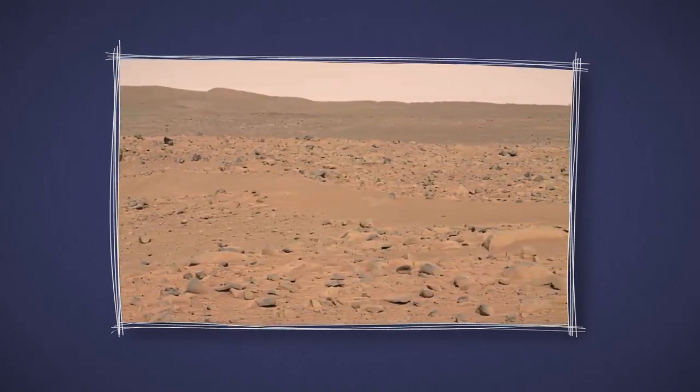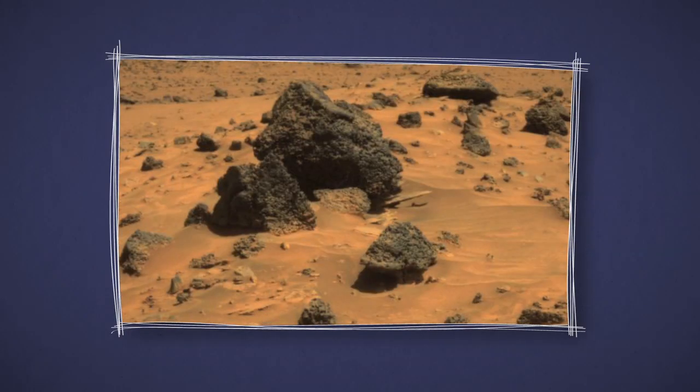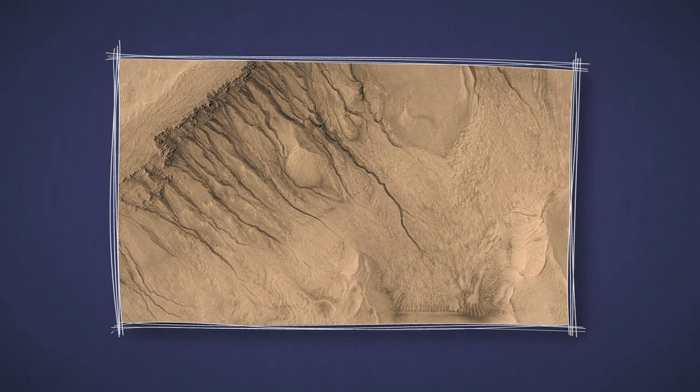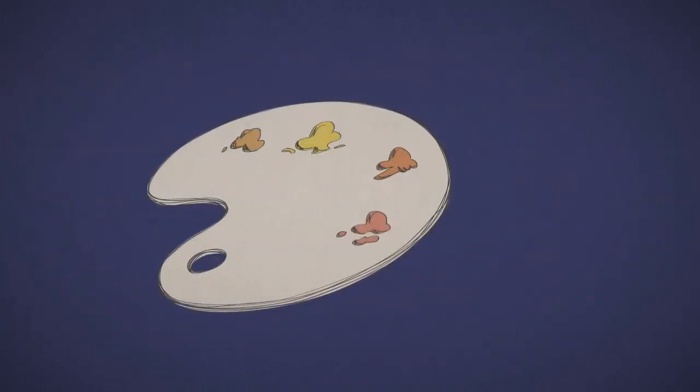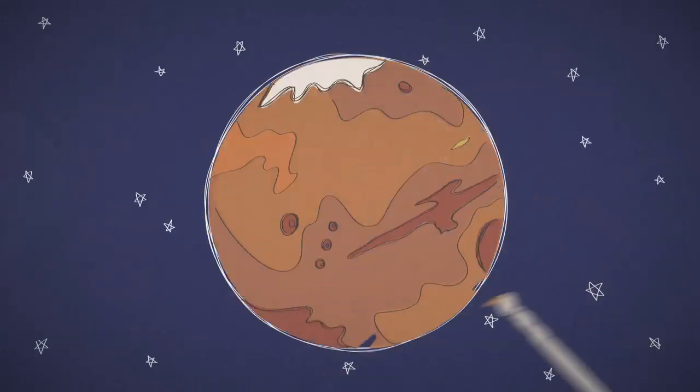Depending on what minerals are around, some landscapes can be more golden, brown, tan, or even a little greenish. So in fact, there are a lot of different colors on what we call the red planet.